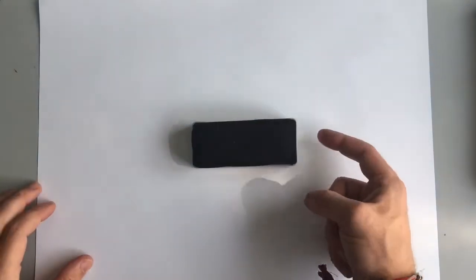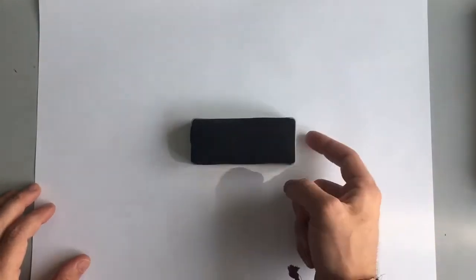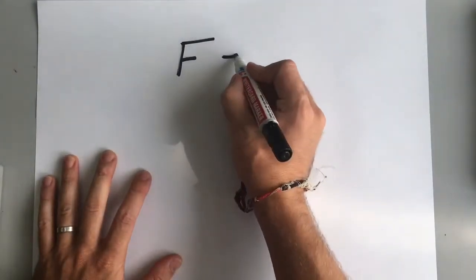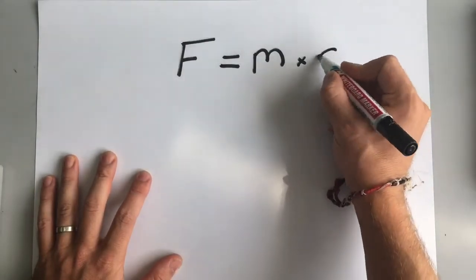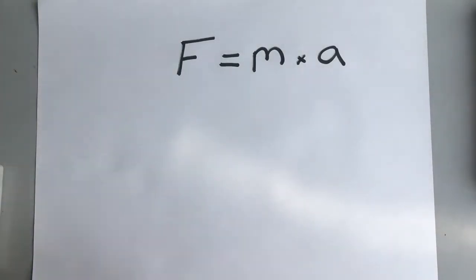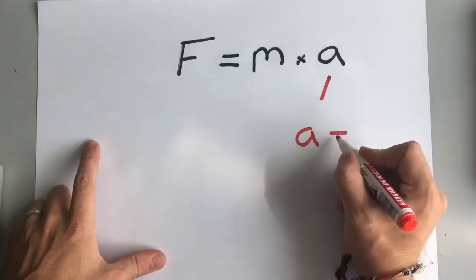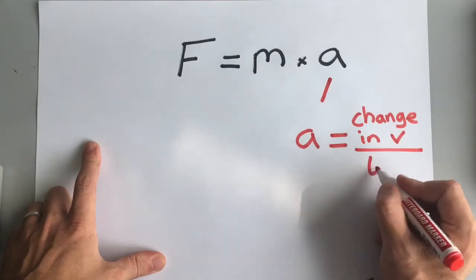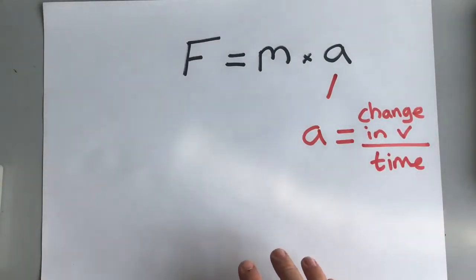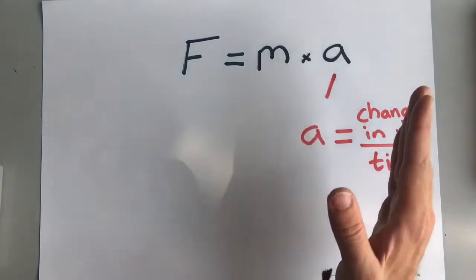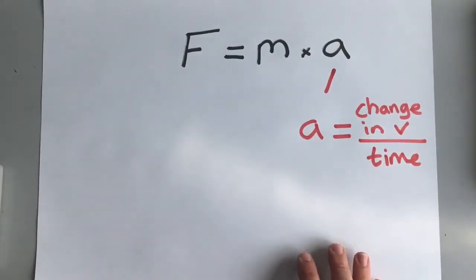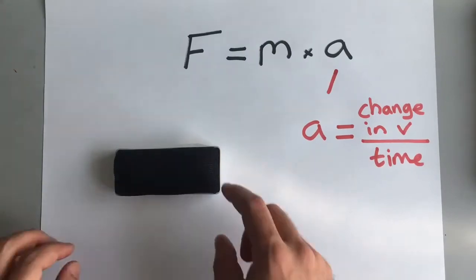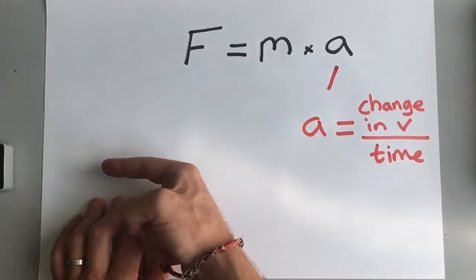We know from experience that if you put a force on something it makes it speed up. We can be more scientific about that: the resultant force equals the mass of the object times its acceleration. Acceleration is the change in speed, or more precisely the change in velocity divided by how long it takes. Because velocity has a direction, acceleration also has a direction — and we've found that direction is important for force as well. If I put a bigger force on this block, it will accelerate faster.